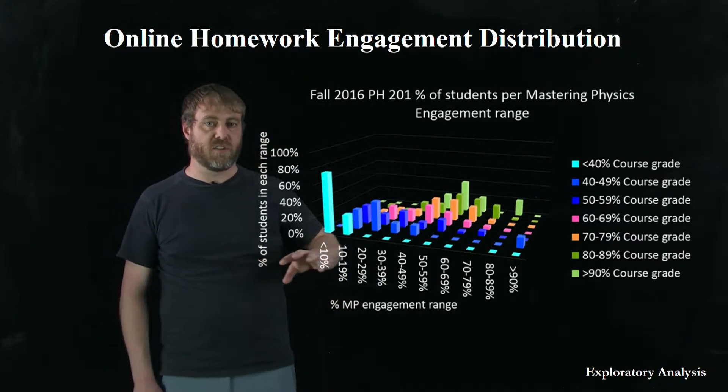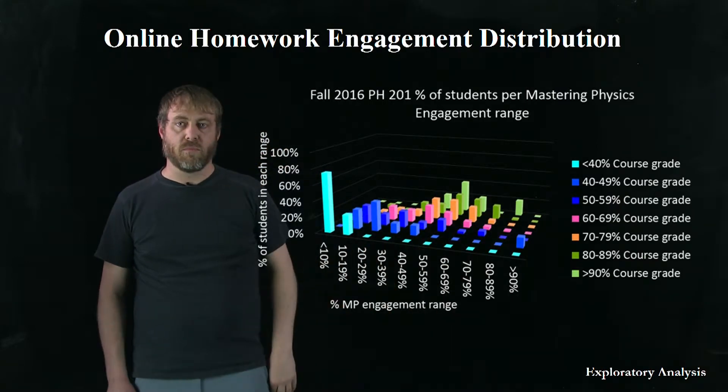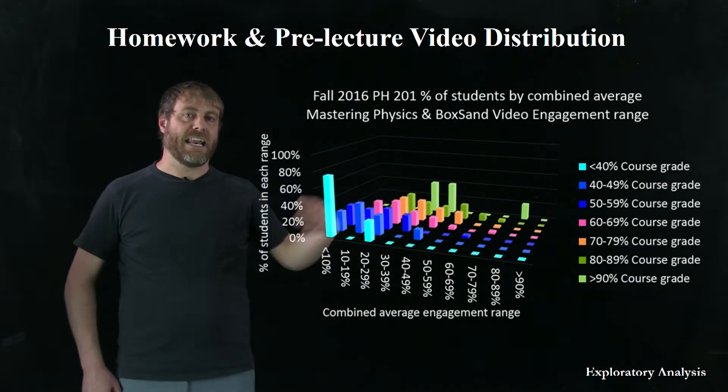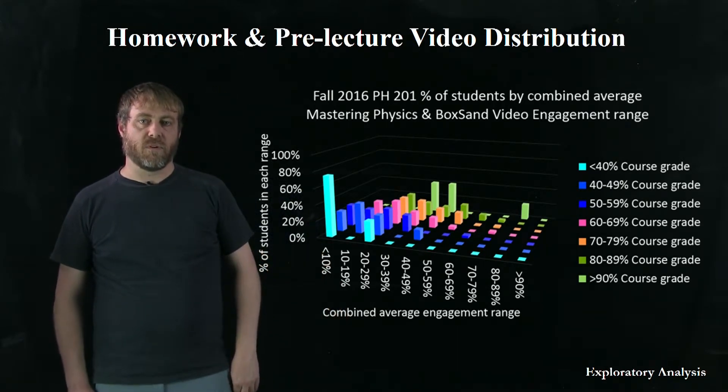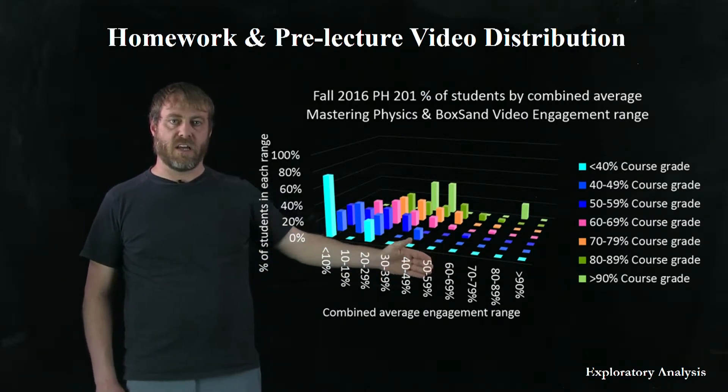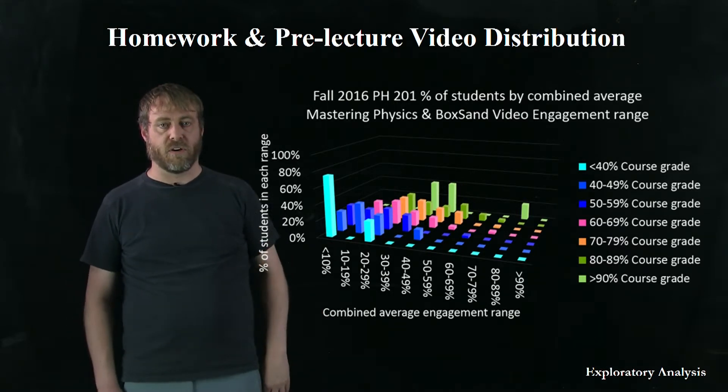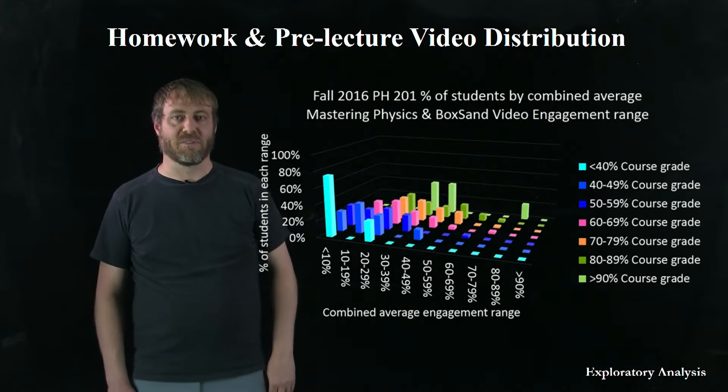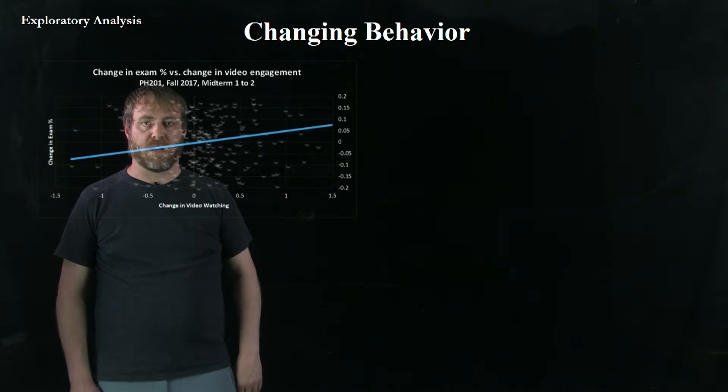So if you're to the left and front, you got low course grade and low Mastering Physics engagement. And if you're to the right and back, you've got a high course grade and high Mastering Physics engagement. Certainly you see the distribution as you might suspect. The students that are actually getting better grades are engaging more and more with their online homework. We added the BoxSand videos and kind of did that together in aggregate with the engagement with the online homework. And it looks kind of similar. Both these plots tend to stop at about 66%. Most of that is because we put a lot of problems on Mastering Physics and we said that you get full credit if you only do two thirds of them.